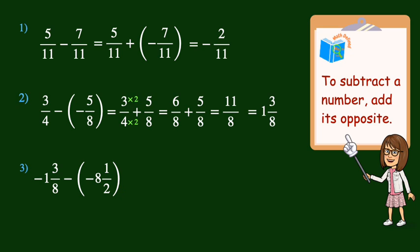For the third problem, we have negative 1 and 3 eighths minus negative 8 and a half. First, we need to rewrite this expression to add the opposite. We keep negative 1 and 3 eighths and add the opposite of negative 8 and a half. Then we need to find a common denominator. I'll choose 8 again. Multiplying the denominator and numerator by 4 will result in negative 1 and 3 eighths plus positive 8 and 4 eighths.